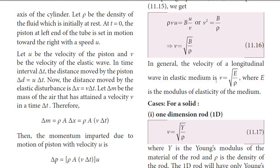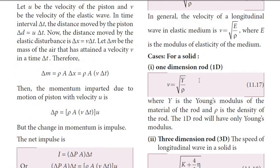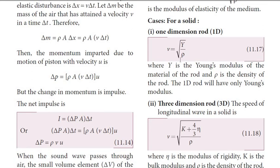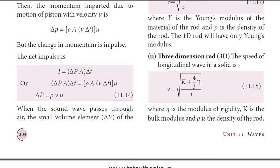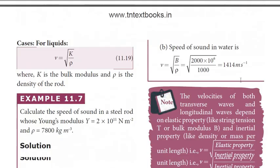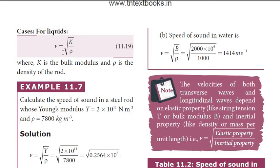In general, the velocity of a longitudinal wave in an elastic medium is V equals square root of E divided by rho. There are three cases. For a solid in a one-dimensional rod: V equals square root of Y by rho, where Y is Young's modulus. For a three-dimensional solid: V equals square root of (K plus 4/3 times eta) divided by rho, where eta is the modulus of rigidity and K is the bulk modulus. For liquids: V equals square root of K by rho, where K is the bulk modulus and rho is the density.